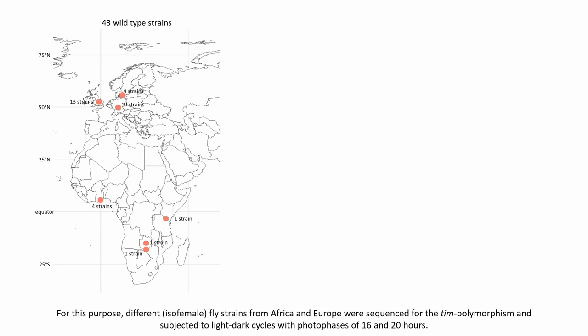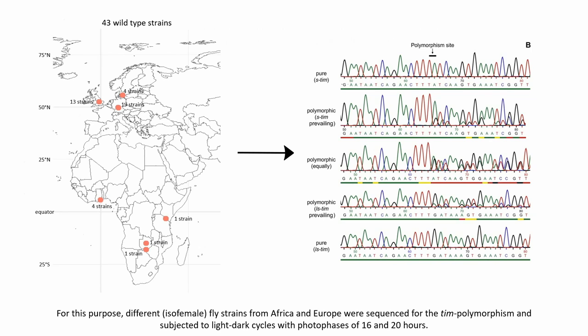For this purpose, different isofemale fly strains from Africa and Europe were sequenced for the timeless polymorphism and subjected to light-dark cycles with photophases of 16 and 20 hours.